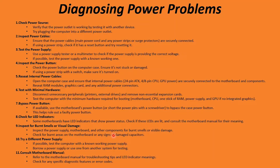Now let's move on to diagnosing power problems. Start by checking the power source — make sure the outlet is working by testing it with another device, or plug the computer into a different outlet entirely. Check your power cables and power strip to make sure they aren't bad, and try swapping them out. PC power cables are pretty standard and used for other devices like printers, so it's easy to find a replacement. Power issues can also be caused by a faulty power supply, so use a multimeter to check voltage or swap in another power supply. It could also be as simple as a stuck or damaged power button on the case.